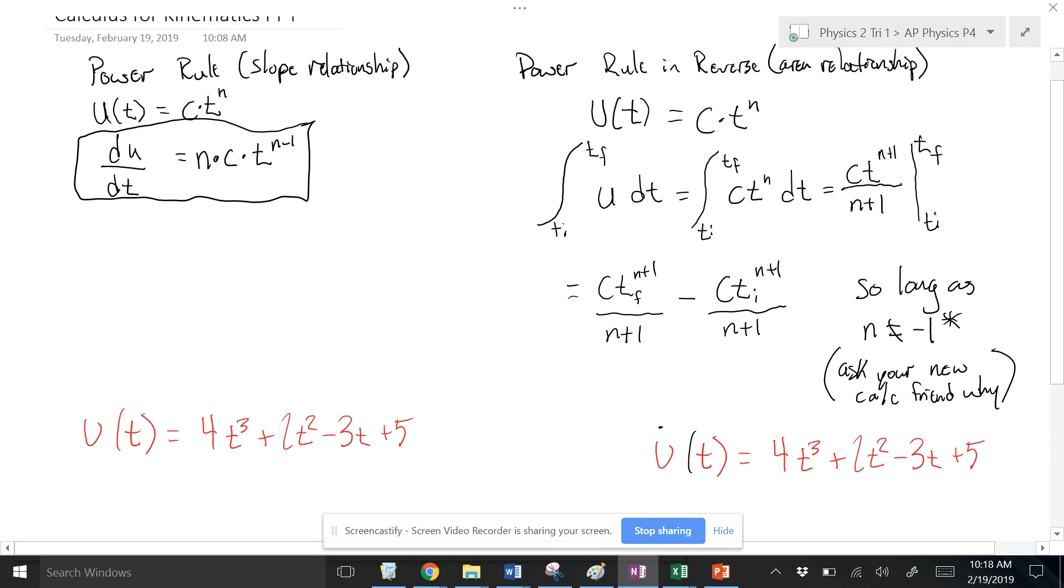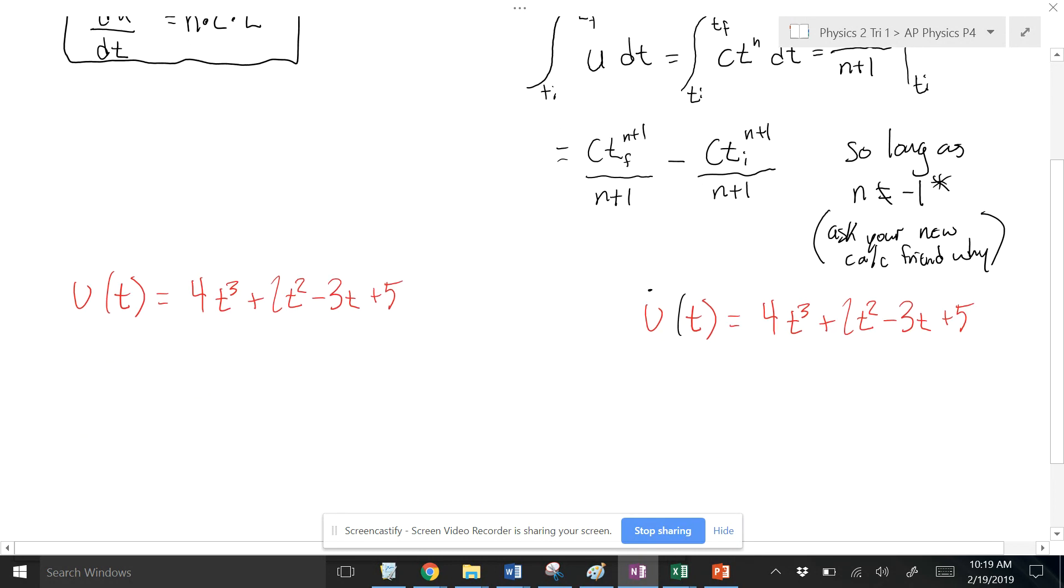If you look at the power rule here, so I've got something u that varies as a function of time, ct to the n. If I want the derivative of that, du/dt, I'm going to take that exponent and pull it down and multiply it by my coefficient out front here, and then I'm going to reduce the power in that exponent.